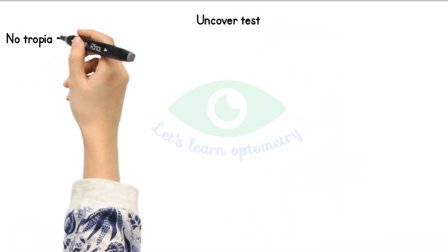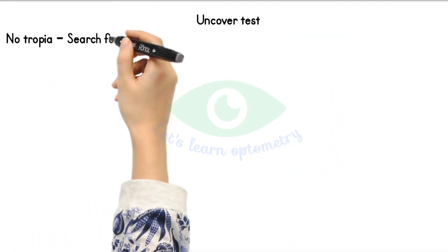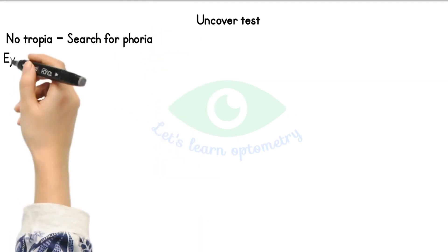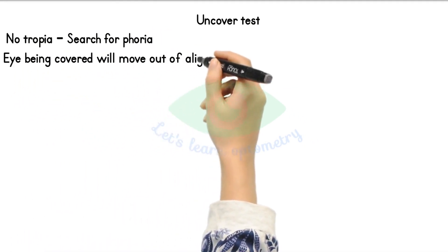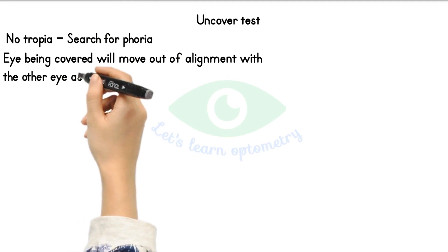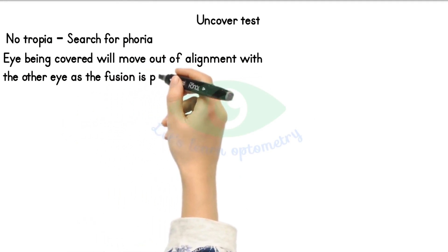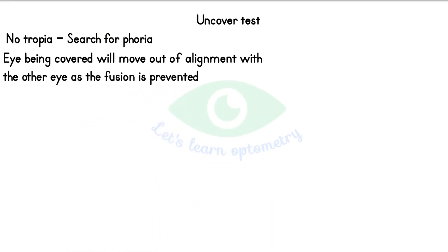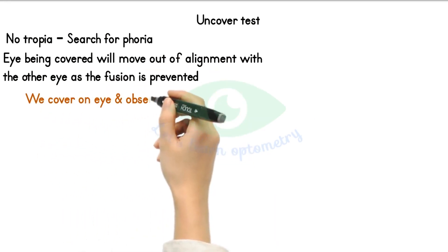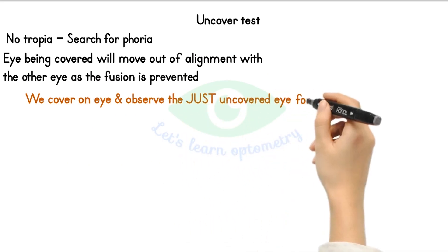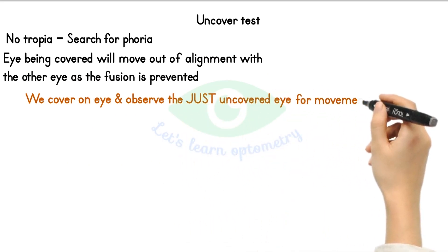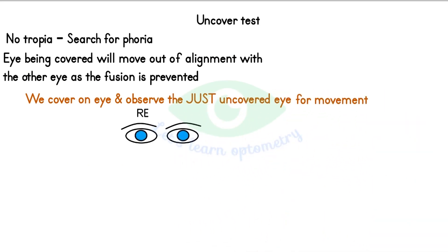Procedure of uncover test: when there is no tropia, we search for phoria with the uncover test. The eye being covered will move out of alignment with the other eye as fusion is prevented. In the uncover test we cover one eye and observe the just-uncovered eye for movement. Here the eyes are aligned during binocular viewing. When we cover the right eye, the eye under the cover deviates outwards.